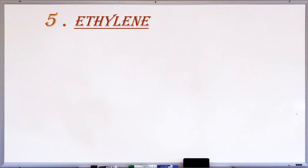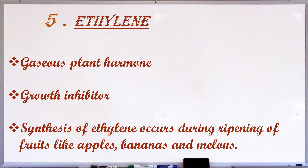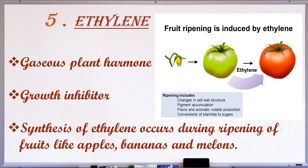The next phytohormone is ethylene. It is a gaseous plant hormone and a growth inhibitor. It is concerned with maturation and ripening of fruits. During fruit ripening, the green chlorophyll pigment of raw fruits gets degraded, and gradually there is domination of other colored pigments like carotenoids and anthocyanin. Flavor, smell (aroma production) and conversion of starch to sugar also take place. Maximum ethylene is synthesized during this gradual change.